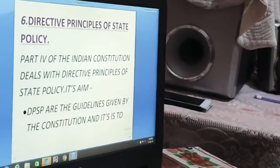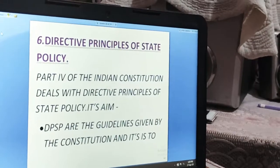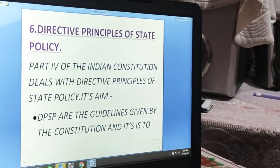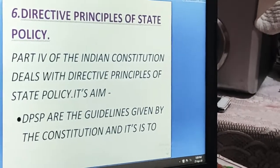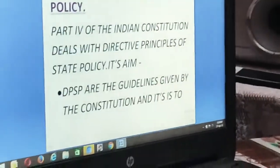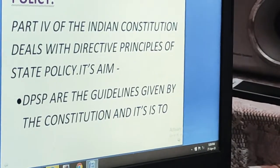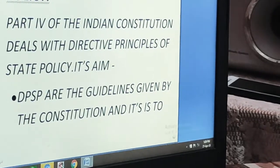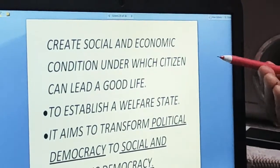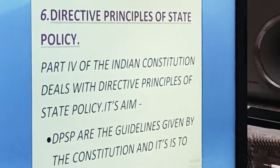The Directive Principles of State Policy is contained in Part 4 of the Indian Constitution. It deals with Articles 38 to 51. Its first aim is that it is a guideline given by the Indian Constitution to create social and economic conditions under which citizens can lead a good life.